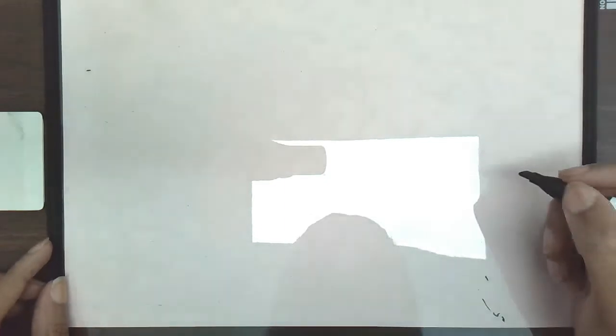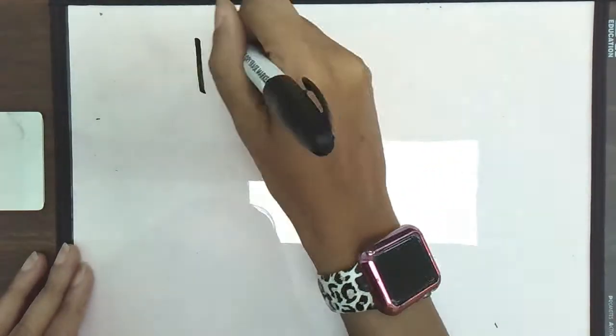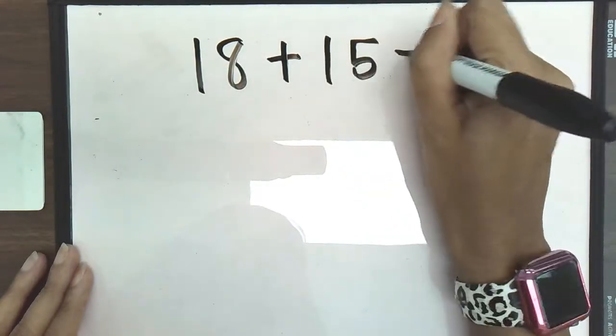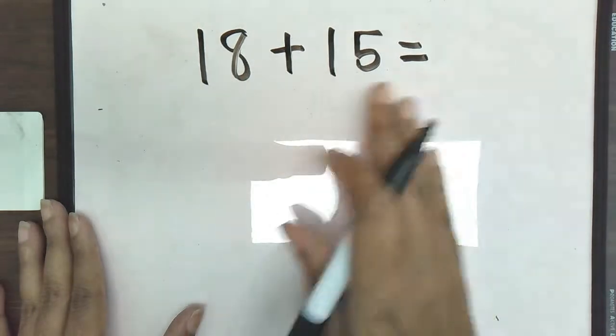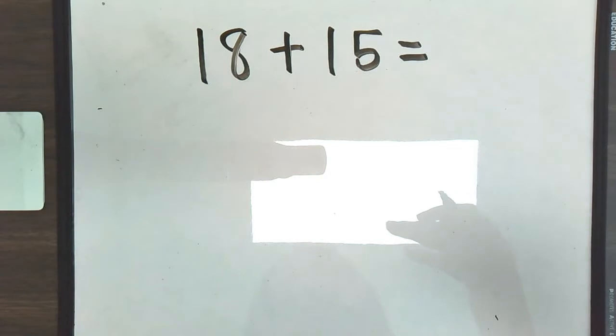I'm going to jump right in. So let's take a look at the first problem, which is going to be 18 plus 15. So the idea here, again, is that we want to look at both of these numbers and we want to try to see which one of these numbers is closest to a 10. And what I mean by a 10 is our 10s.